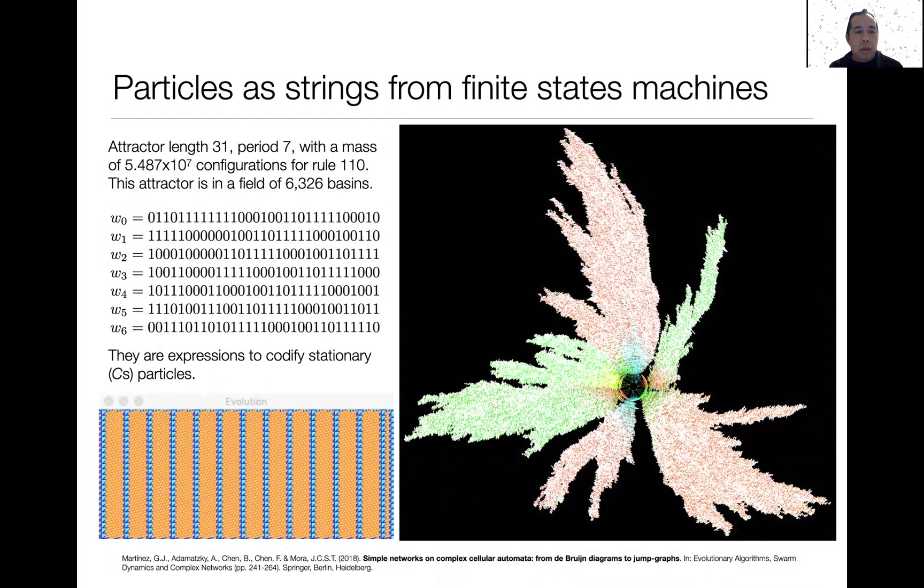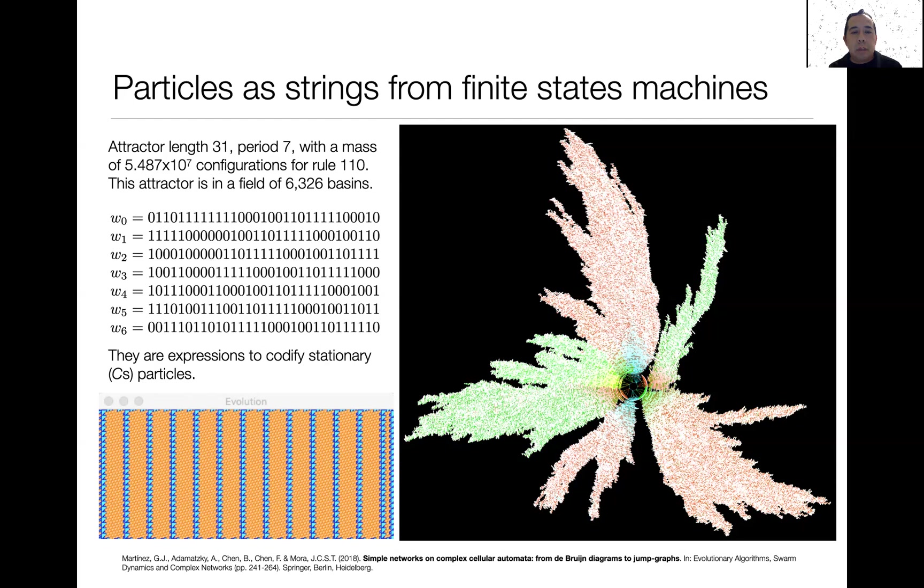Another useful theorem to find this string is the cycle graphs. It is a function built with global configuration for a length event. In this case, we calculate the strings of length 51. We decodify the block of cells which determine the stationary particles in Rule 110. Of course, the space is huge and actually some algorithms can calculate some of them in units. The attractor displays complex behavior because the history of this branch are asymmetric. But the important information for us is the attractor that is defined by seven vertices that are exactly the regular expression to codify this stationary particle.